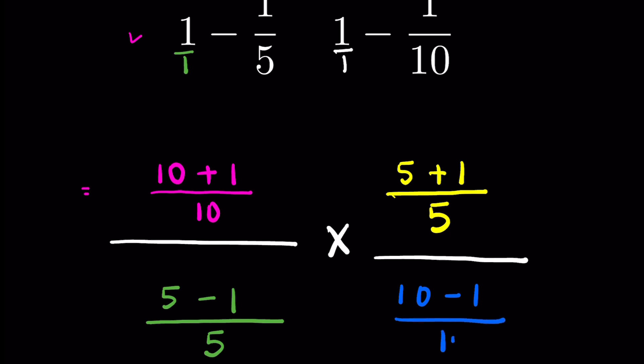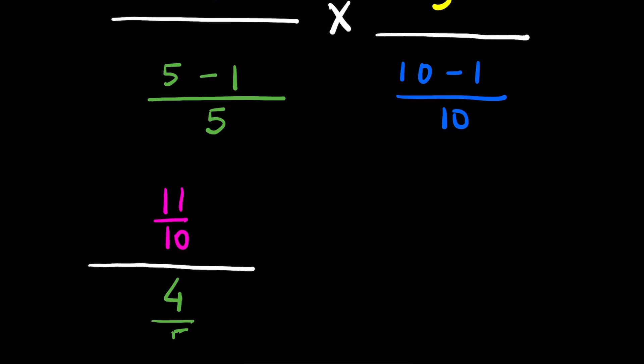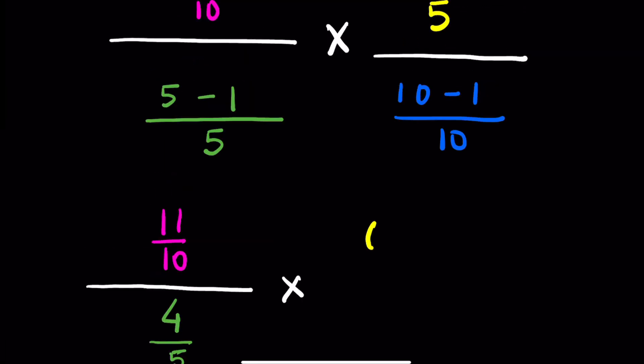So upon 5 minus 1 is 4, 1 upon 5, then multiplication. 5 plus 1 is 6 upon 5. Then 10 minus 1 is 9 upon 10.